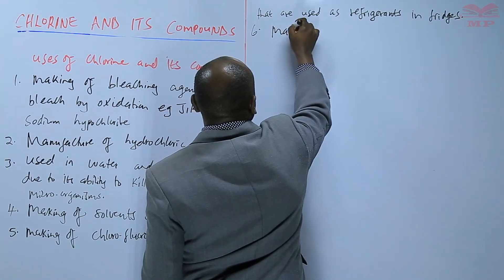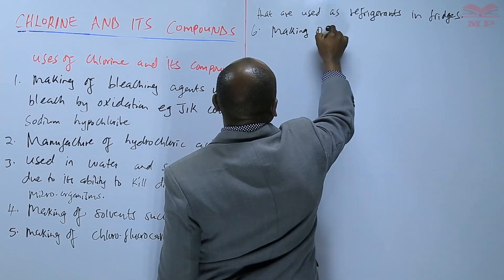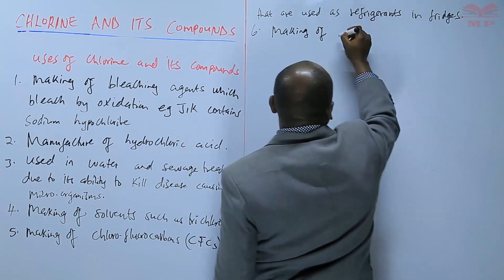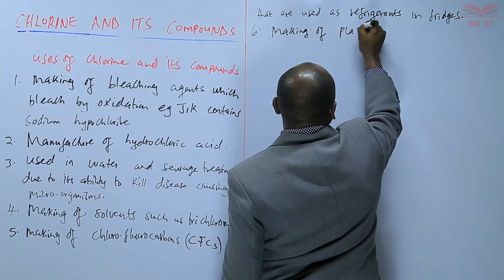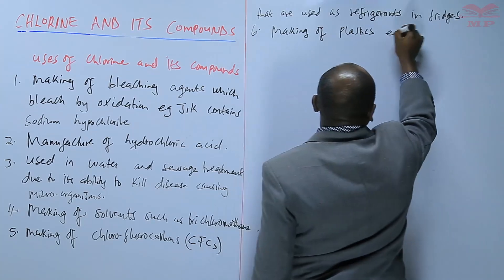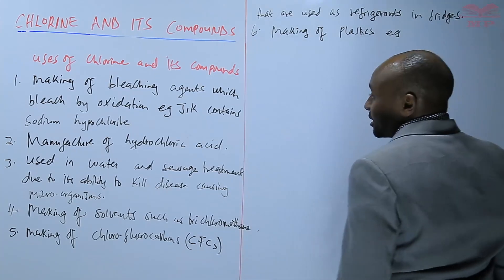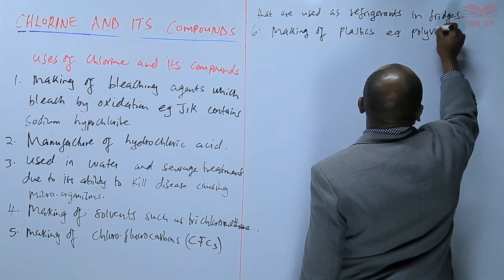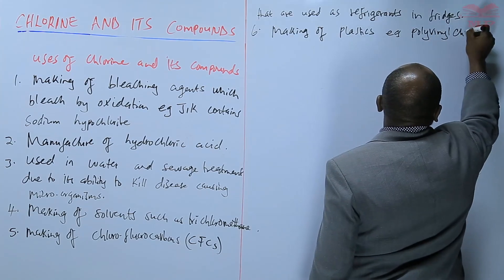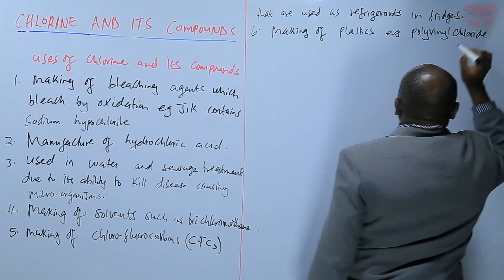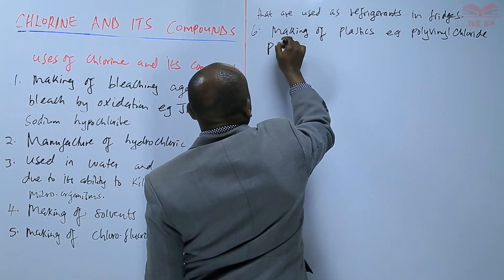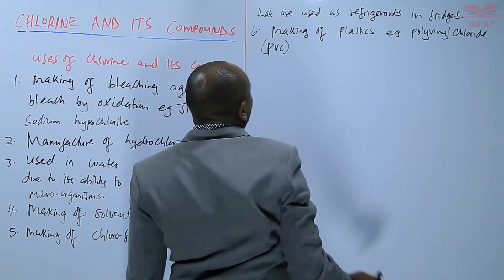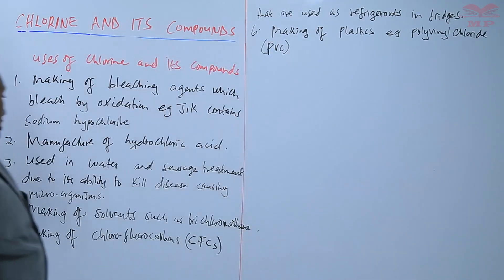Chlorine is also used in the making of plastics. For example, there is a type of plastic called polyvinyl chloride, also known as PVC, which is made from chlorine.